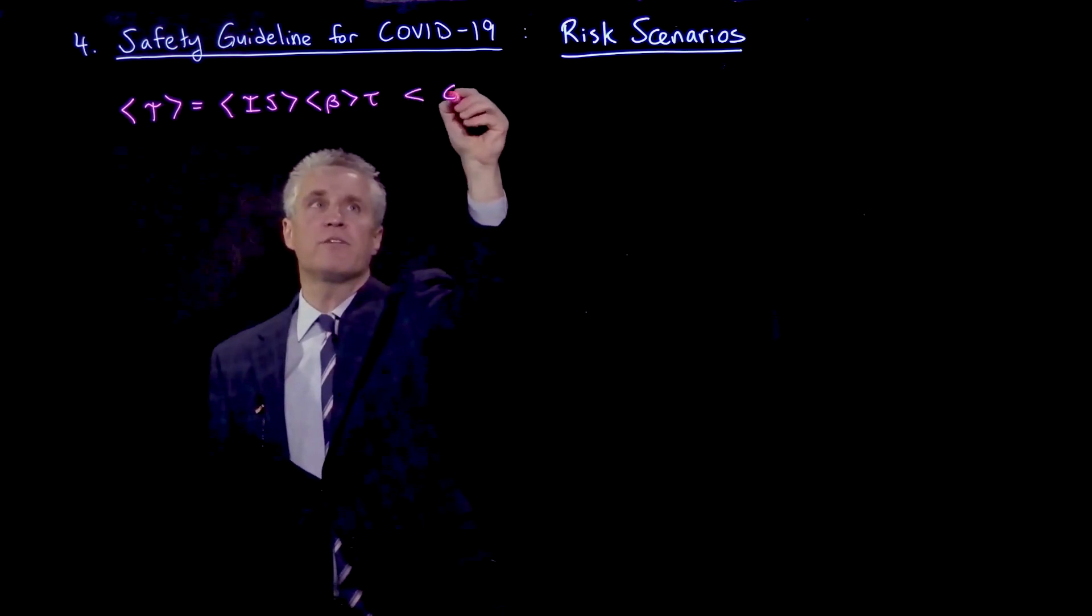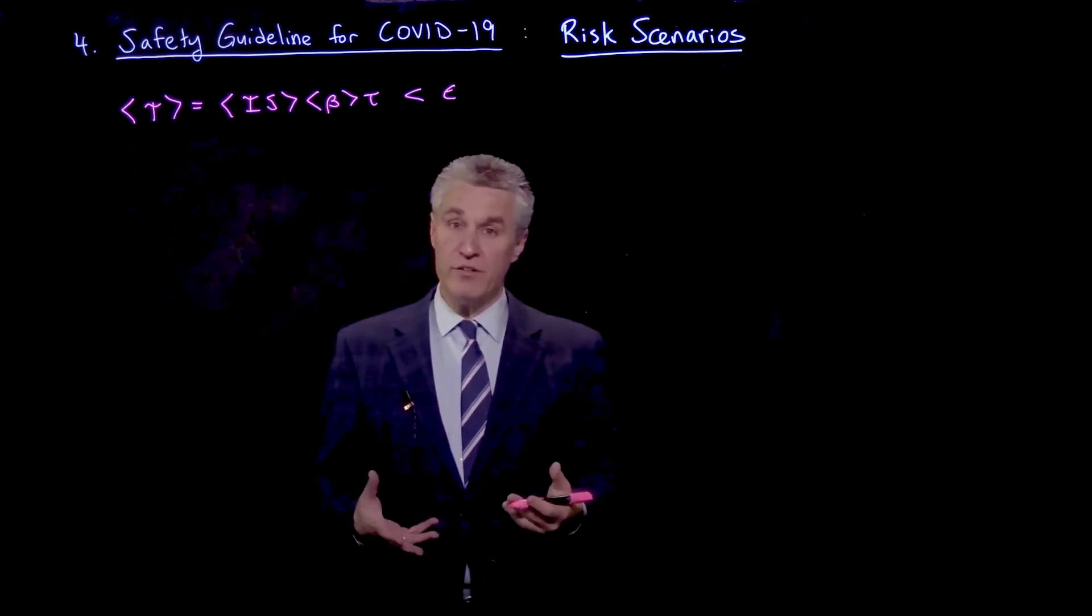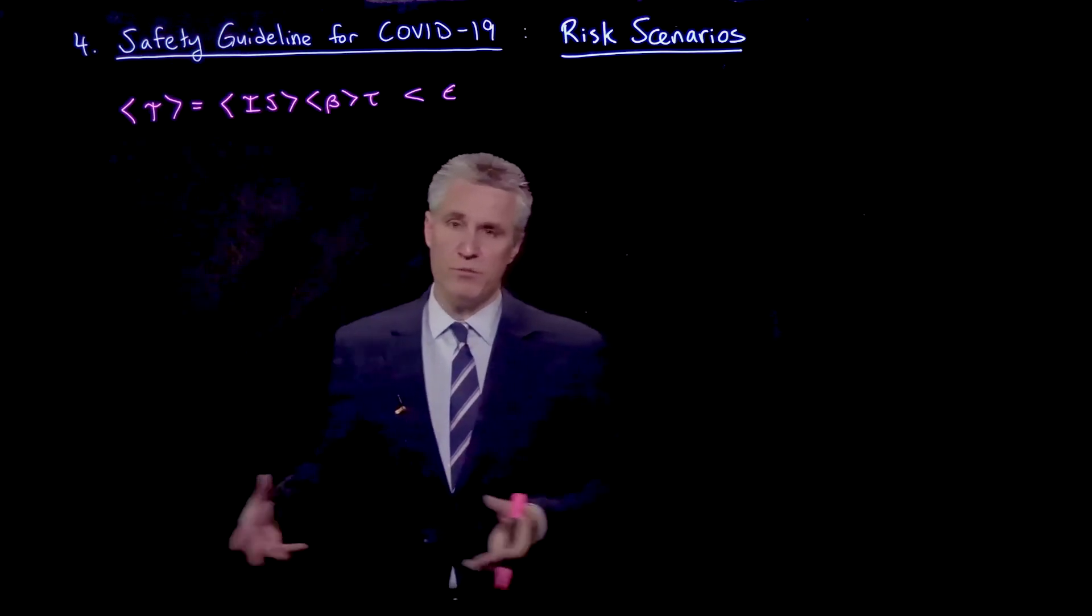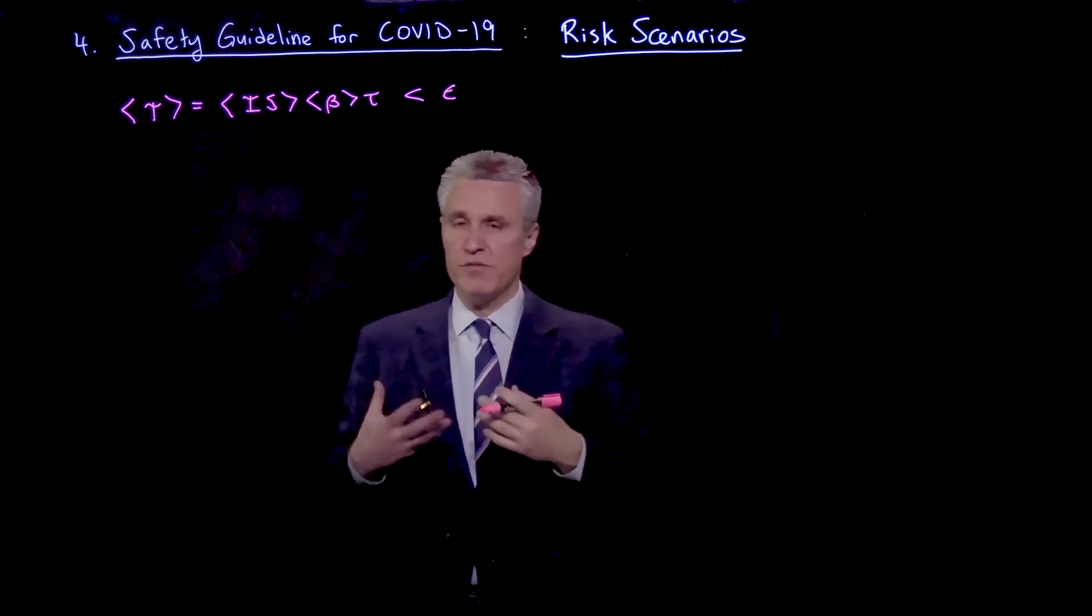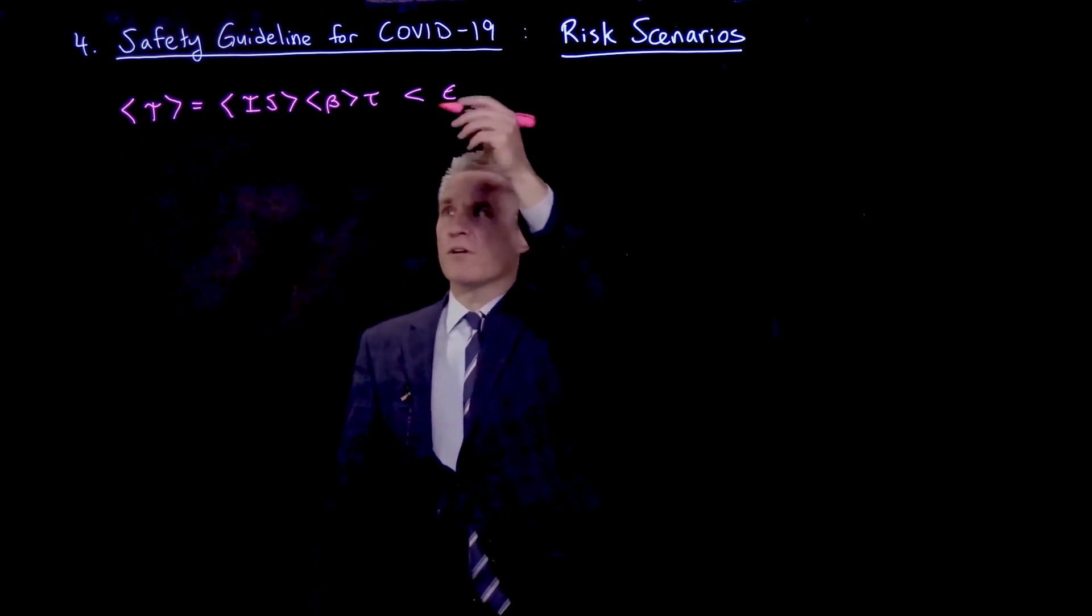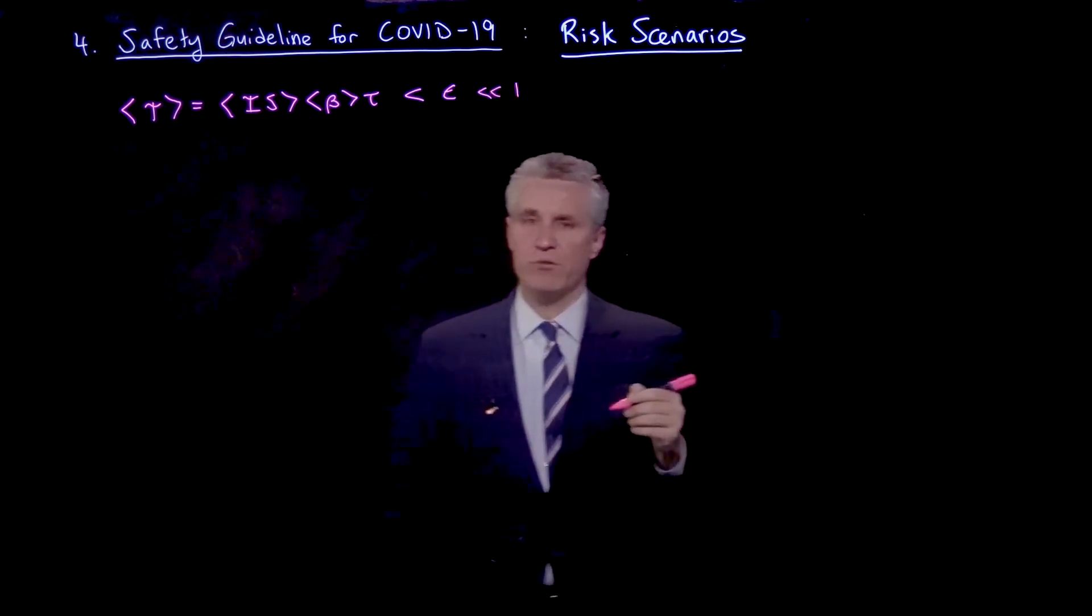We want this less than some tolerance. And also, given the various approximations we've made, where for example we have not let the number of susceptibles change, people can be infected more than once, and we've neglected various aspects of the model in that way, this should typically be assumed less than one.